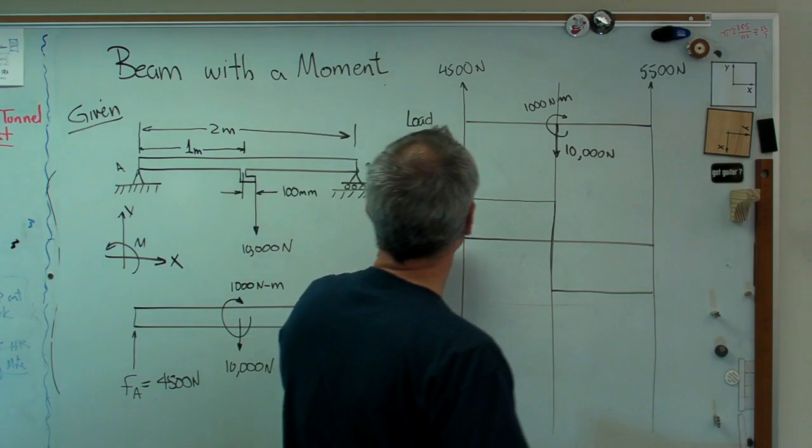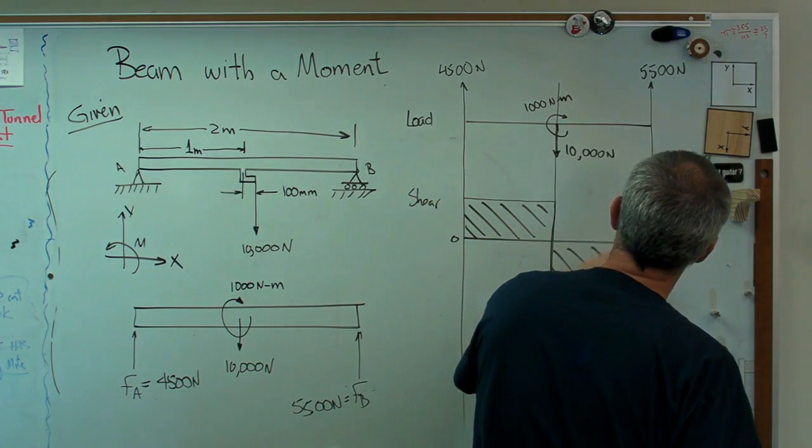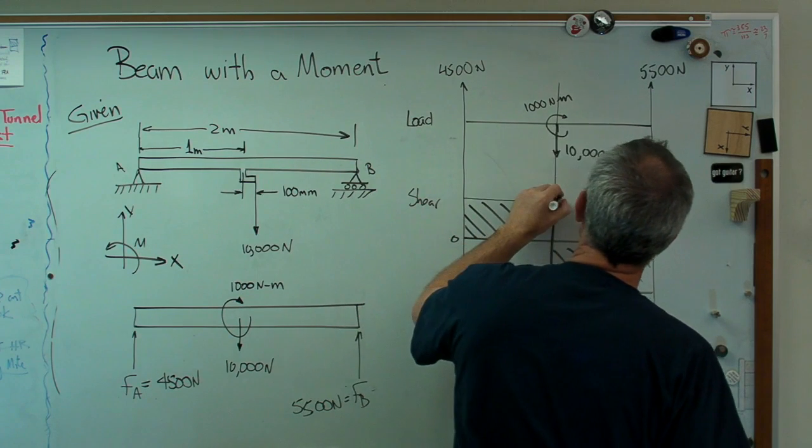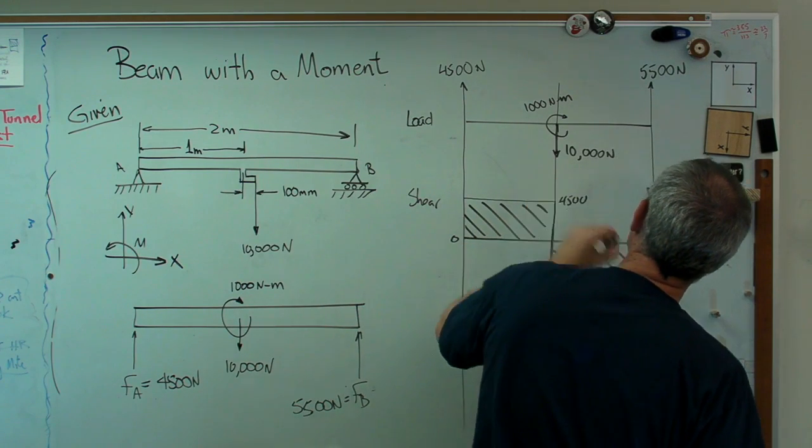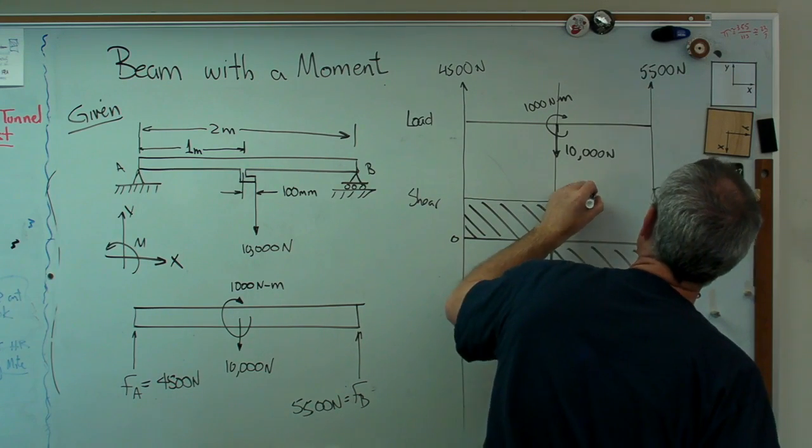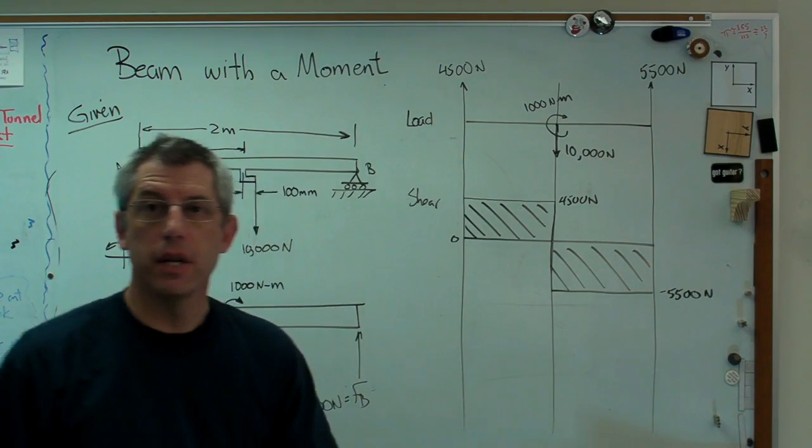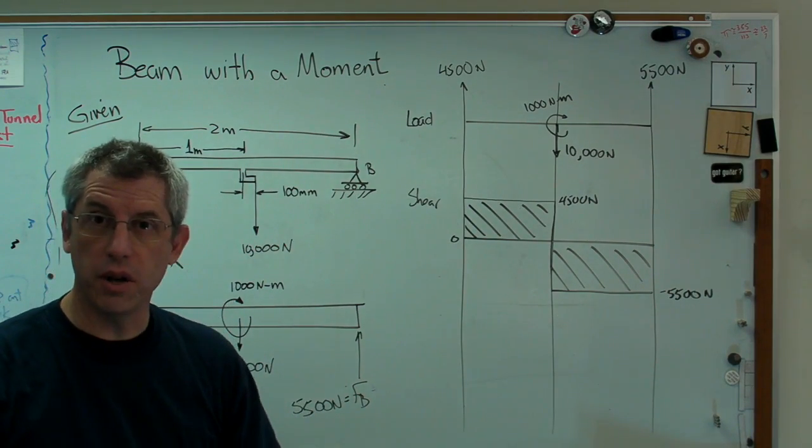Then over and go up 5,500 newtons again, and I get to zero. If you don't wind up at zero here on the other end, something's wrong. So let me just color this in so we know what we're looking at. That's 4,500 positive. And that's 5,500 negative. That is newtons. So that part's also pretty easy.